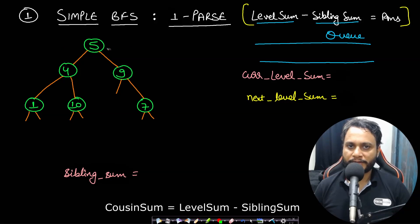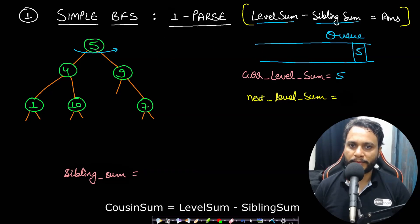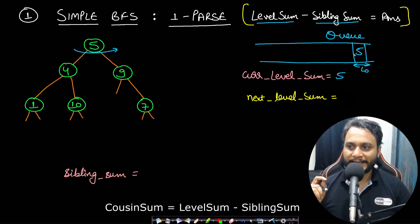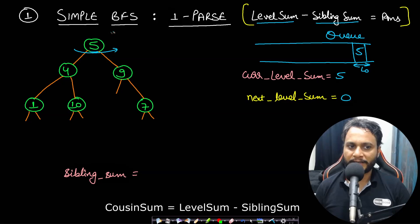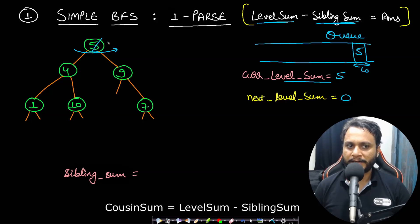Starting the parse from the first node, we insert the root into the queue for level-order traversal and assign the current level sum to the root value. We find the queue size — it's 1 at level 0 — so we pop exactly one item. I initialize next level sum to 0, and for the root, the sibling sum is 5. Subtracting: level sum minus sibling sum gives 0, so the root is replaced with 0.